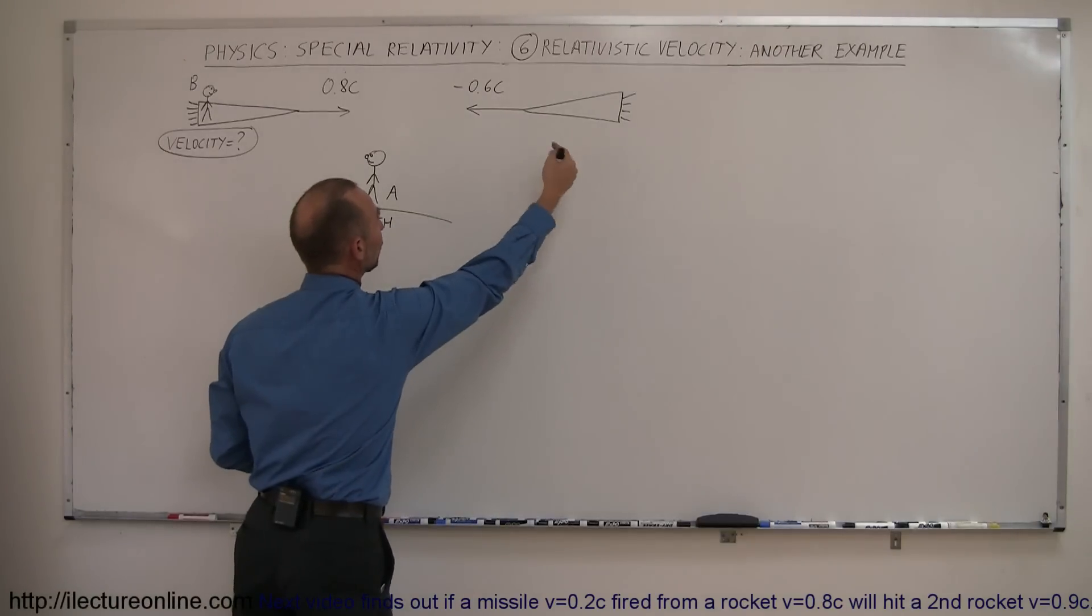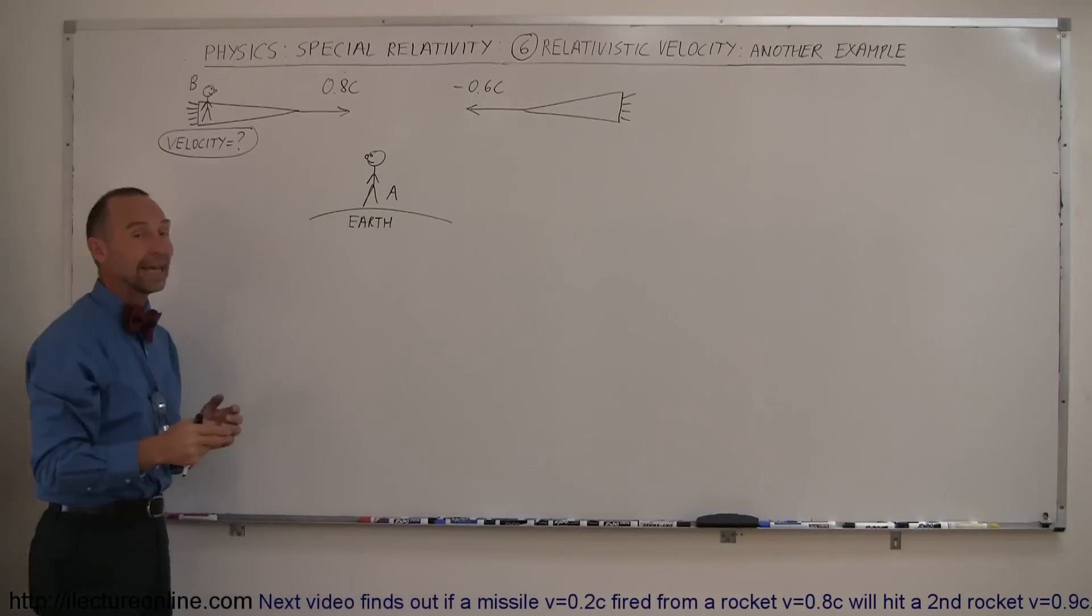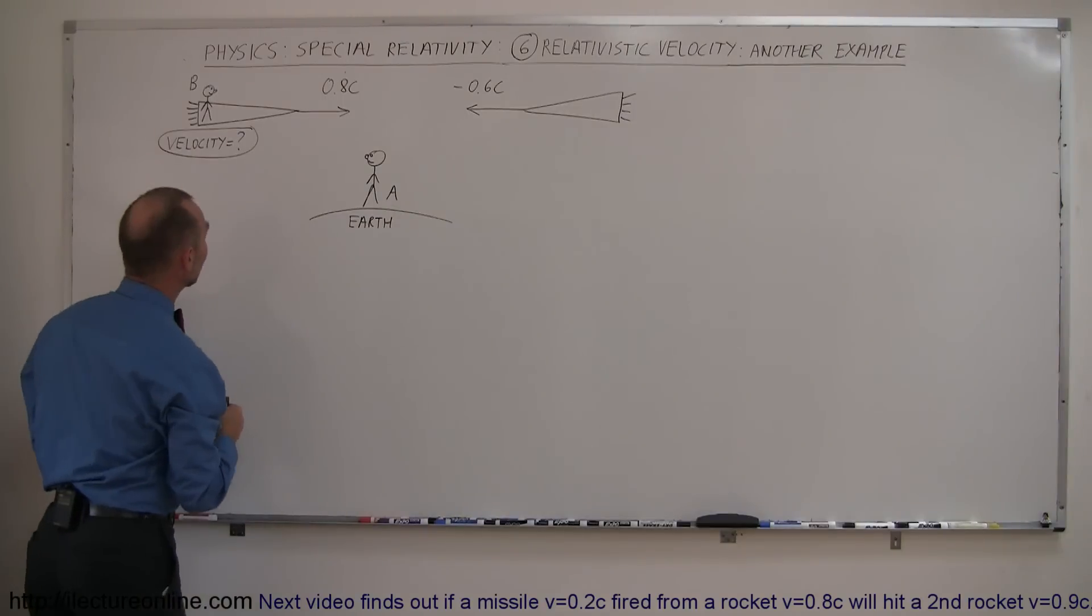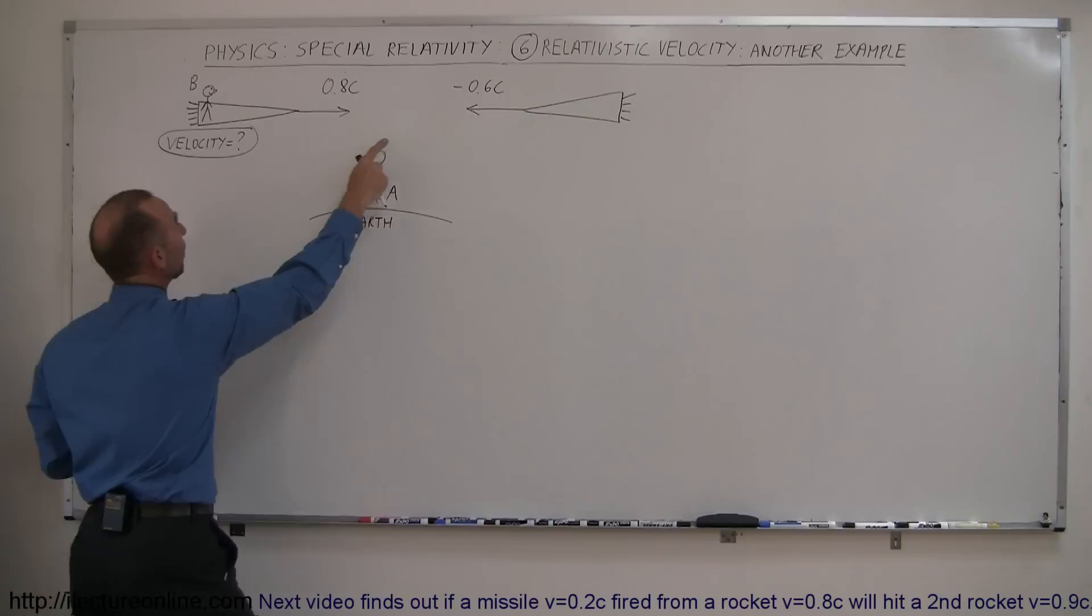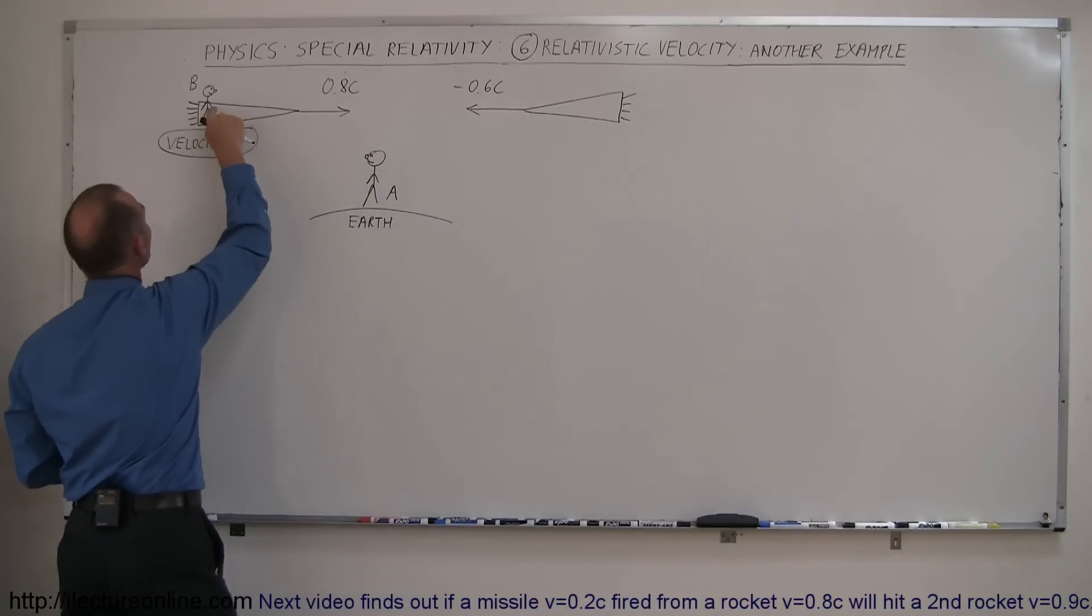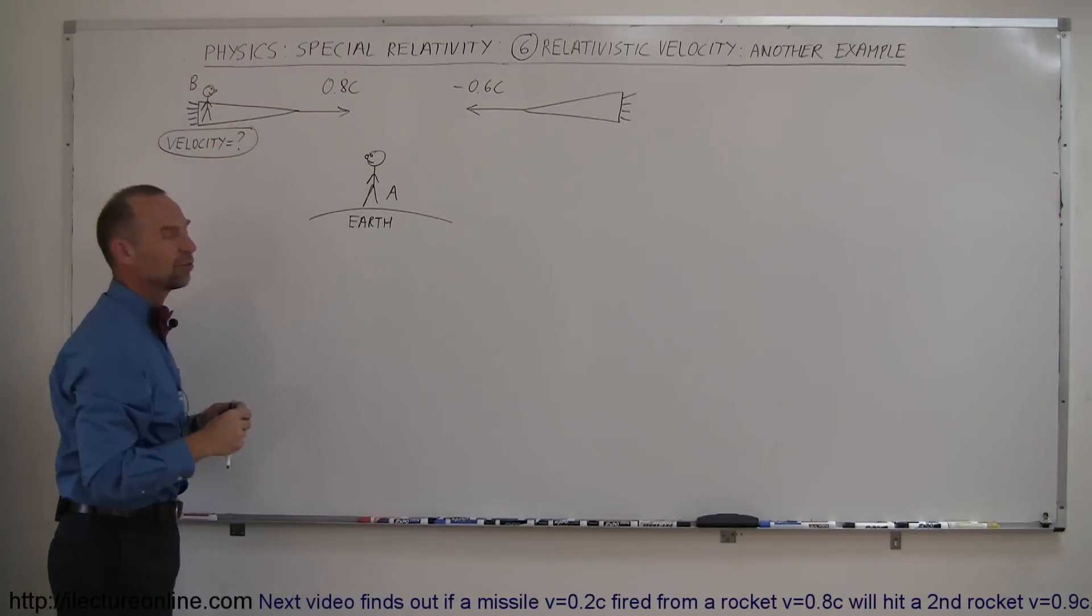The spaceship over here is moving to the left at 0.6c, again relative to the Earth. And then the question might be, how fast is this spaceship moving relative to the observer on the spaceship on the left?